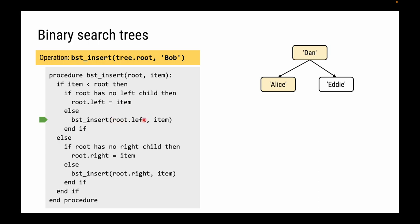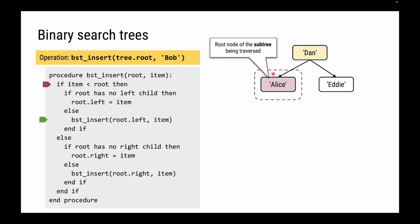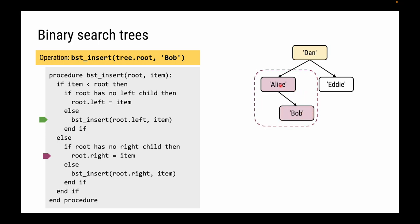Starting the algorithm again on the tree rooted by Alice: if the item we're looking for is less than the root — it's not, Bob is greater than Alice. If the root has no right child — that's correct, Alice has no right child — we can insert Bob to the right of Alice. Now we're done. The recursive call finishes, and execution returns to the previous call, which can also finish.